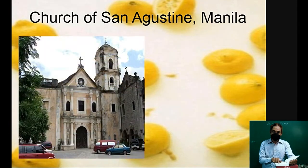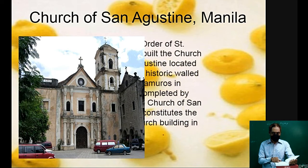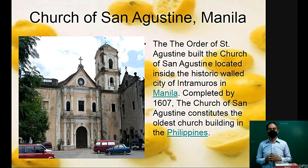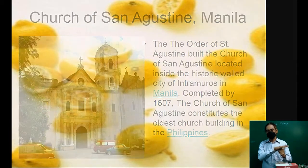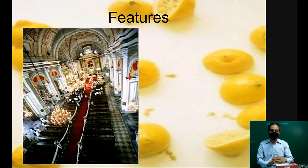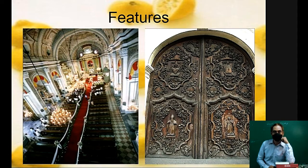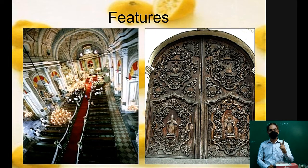The Church of San Agustin, Manila — this is how it looks until today; it is preserved. The Order of Saint Agustin built the Church of San Agustin, located inside the historic walled city of Intramuros in Manila. Completed in 1607, the Church of San Agustin is the oldest church building in the Philippines. Just look at the entrance door, made from hardwood — carved and sturdy.